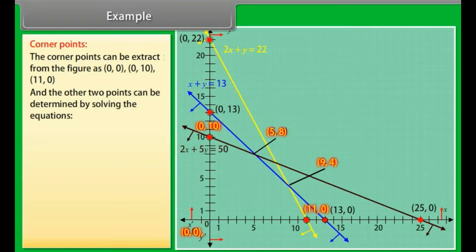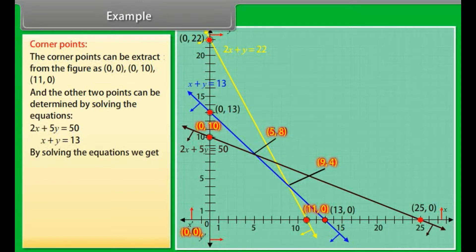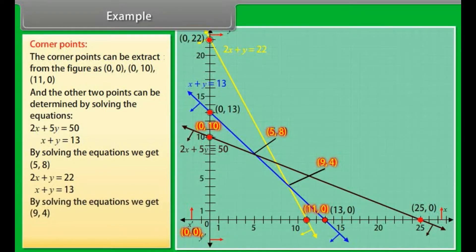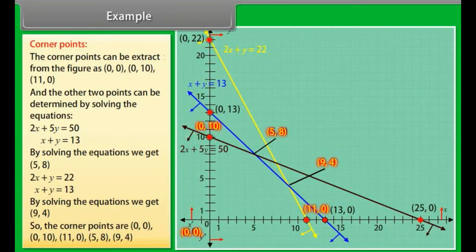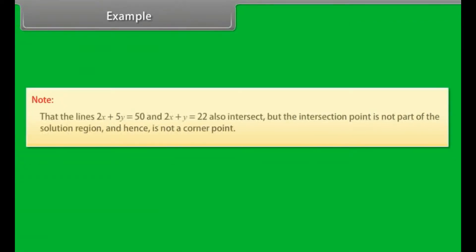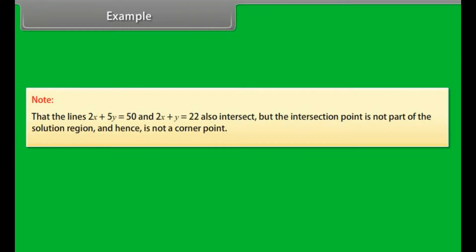The corner points can be extracted from the figure as (0, 0), (0, 10), and (11, 0). The other two points are determined by solving pairs of equations: solving 2x plus 5y = 50 and x plus y = 13 gives (5, 8); solving 2x plus y = 22 and x plus y = 13 gives (9, 4). So the corner points are (0, 0), (0, 10), (11, 0), (5, 8), and (9, 4). Note that lines 2x plus 5y = 50 and 2x plus y = 22 also intersect, but that intersection point is not part of the solution region and hence is not a corner point.